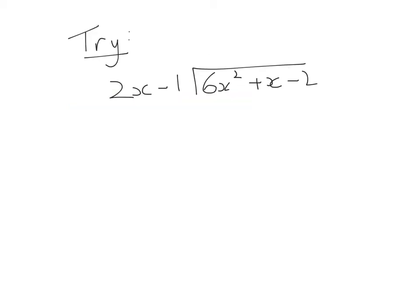Okay guys, if you can pause the video now, have a go at this question, and then play it to make sure that you got the right answer. So, 2x multiplied by what gives me 6x²? That is going to be 3x. I multiply that by both of these terms. That gives me 6x² - 3x. Then I change both of their signs.